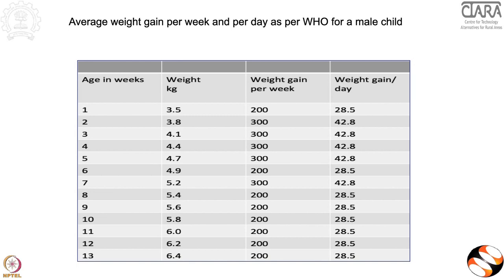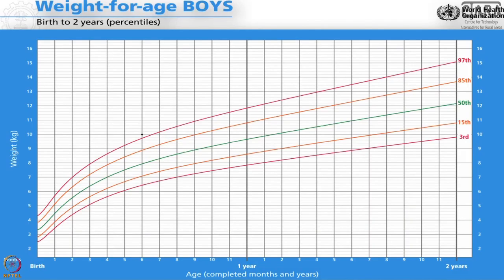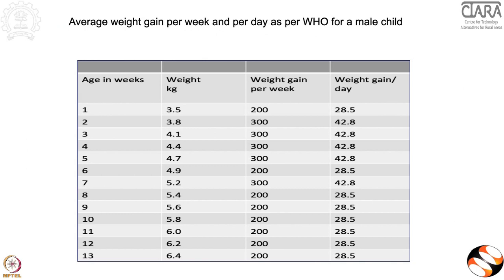If this child is not given proper complementary foods after six months of age, he will not gain weight — his muscles will start melting. I'll explain in my second session how muscles start melting. Once muscles start wasting, children become leaner and leaner until they become moderately or severely underweight. It's very important that after establishing proper breastfeeding, at six months mothers need to know what food to start — I specifically focus on a protein-rich diet.